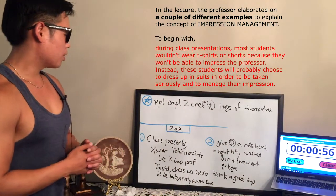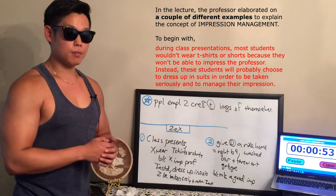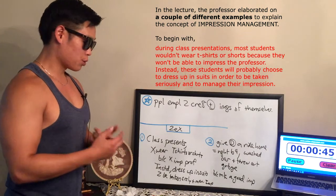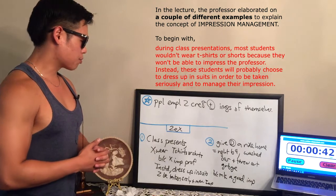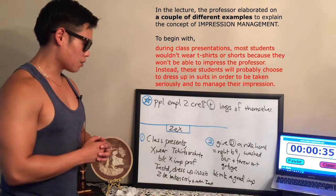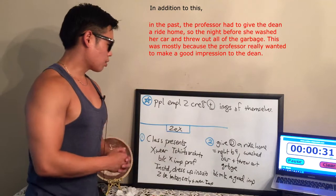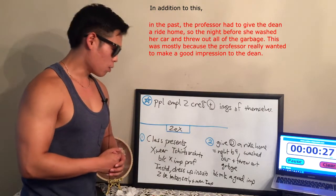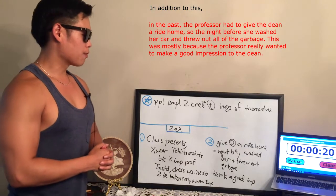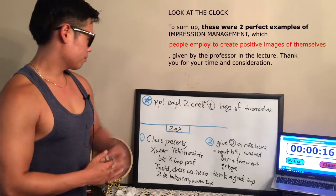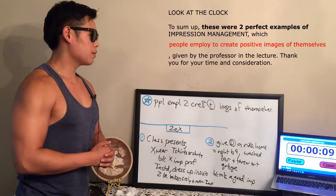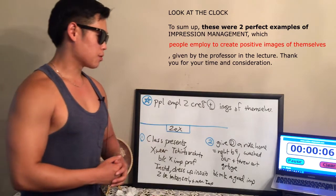In the lecture, the professor elaborated on a couple of different examples to explain the concept of impression management. To begin with, during class presentations, most students will not wear t-shirts or shorts because they won't be able to impress the professor; instead, these students will probably choose to dress up in suits in order to be taken seriously and to manage their impression. In addition to this, in the past the professor had to give the dean a ride home, so the night before she washed her car and threw out all the garbage — mostly because she really wanted to make a good impression on the dean. To sum up, these were two perfect examples of impression management, which people employed to create positive images of themselves, given by the professor in the lecture.